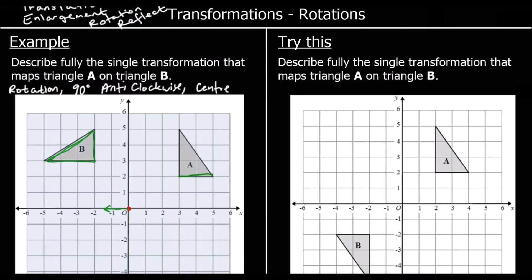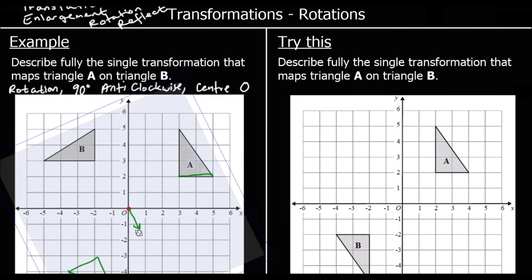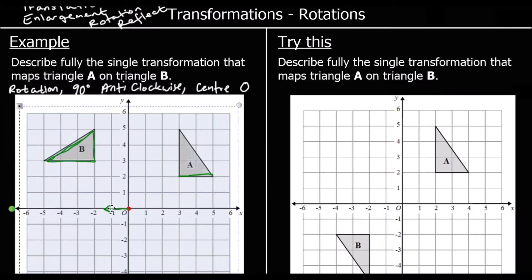Centre at the origin. So it's a rotation, 90 degrees anticlockwise — or we could say 270 degrees clockwise, it's the same thing — with the centre at the origin. And that is all the information we need to give: these three parts to describe a rotation.